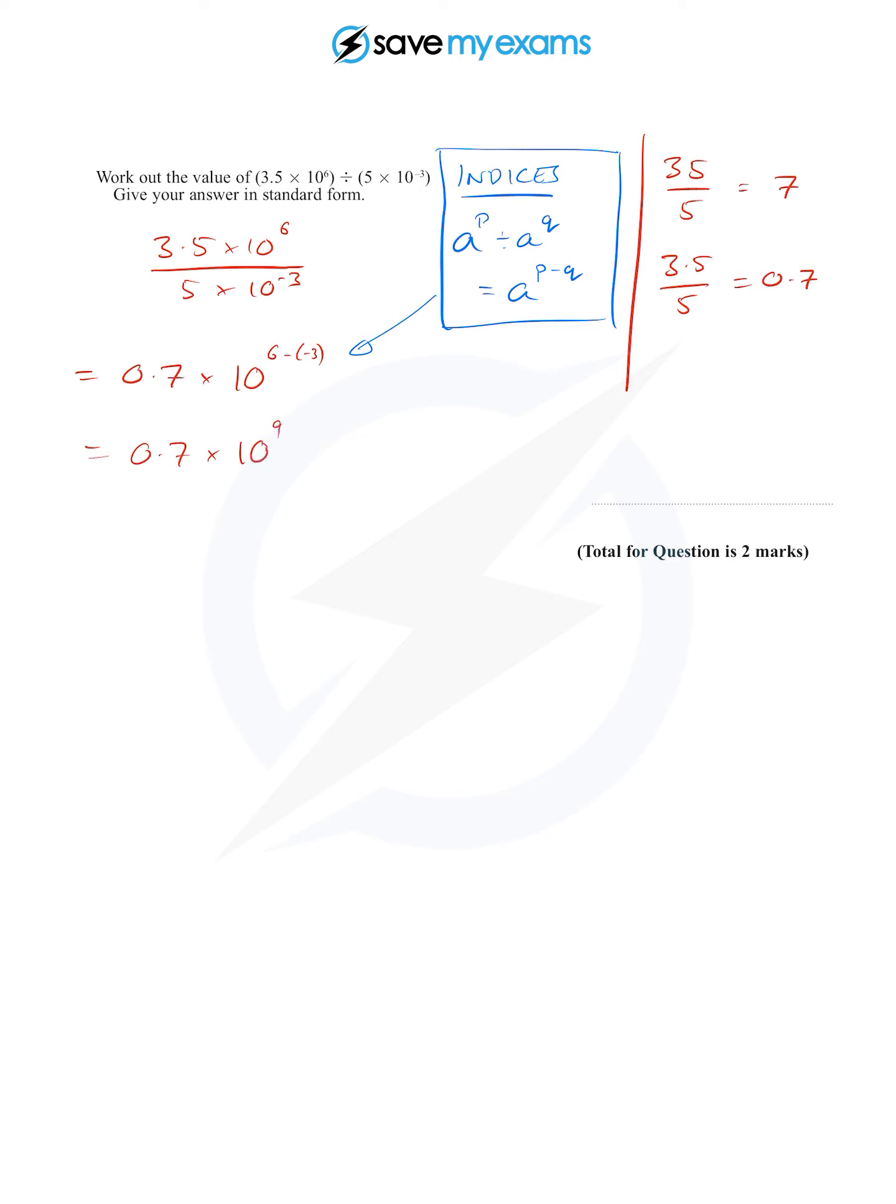Well, that looks a bit like standard form, but our problem is that it starts 0.something. Standard form mustn't have a 0 before the decimal point—it must have one non-zero number. Let's see if we can change that.